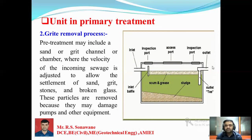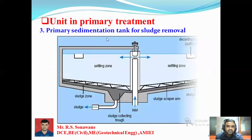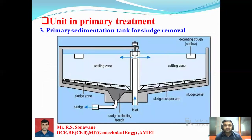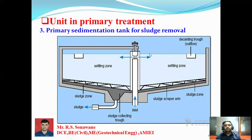The third unit in the primary stage is the sedimentation tank. Water enters through the inlet pipe in a radial direction into the settling zone, and flows toward the outlet. At the bottom of the settling zone is the sludge zone — a scraper arm is used to remove the settled sludge, which is withdrawn through a sludge pipe. This is the primary sedimentation tank, also called the primary clarifier, which completes the physical or primary stage of treatment.